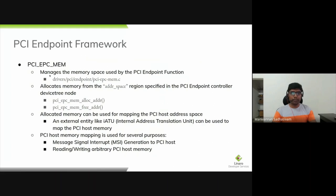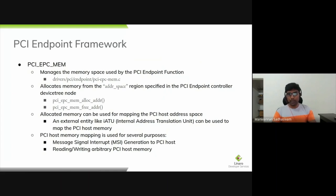The second component is PCI EPC MEM, which manages the memory space used by the PCI Endpoint function. Its primary job is to allocate memory from the address space region specified in the PCI Endpoint controller device tree node. The Endpoint function allocates memory using the memloc API and frees it using the memfree API. The memory allocated from this region is used for mapping the PCI host address space in the PCI Endpoint device.